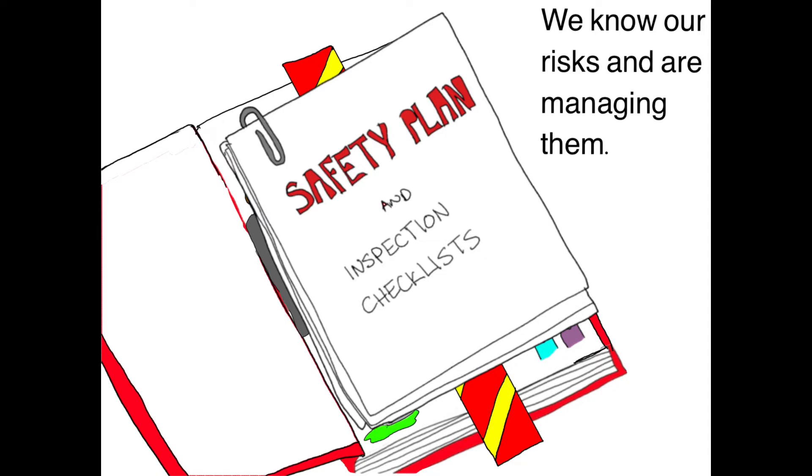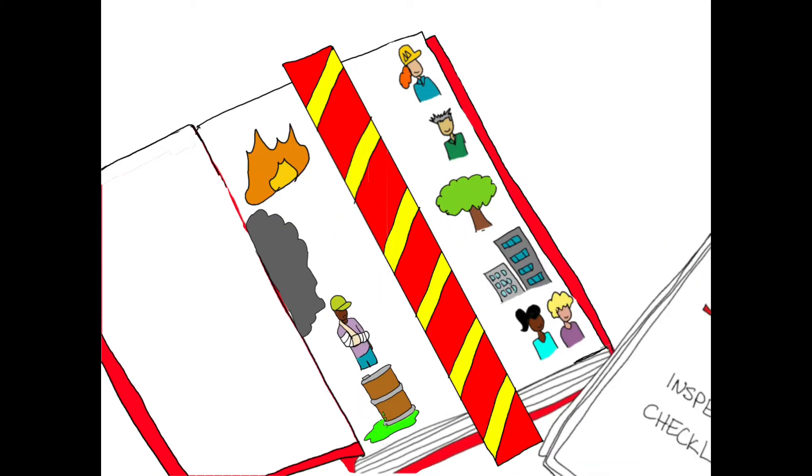The second element looks at how we document all risks in a workplace, including potential ones. We need to continually monitor risks, and the higher the risk, the higher the frequency of monitoring.